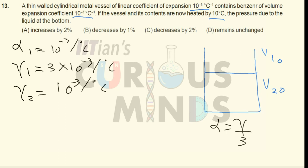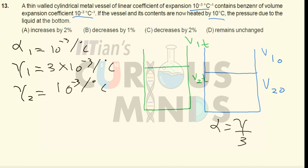Since γ₁ for the vessel (3×10⁻³) is greater than γ₂ for benzene (10⁻³), for the same temperature change, the percentage change in volume of the vessel will be three times more than that of benzene. Therefore, the pressure at the bottom will decrease, because when the vessel expands to V₁(t) and benzene expands to V₂(t), V₂(t) is less than V₁(t).